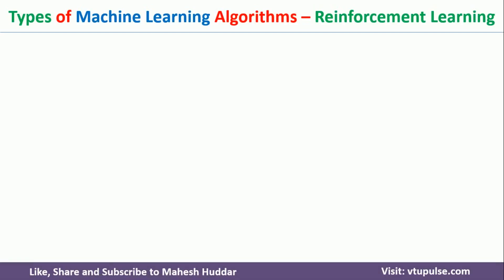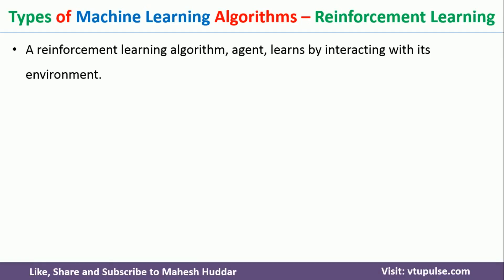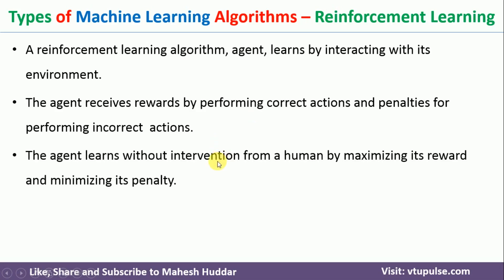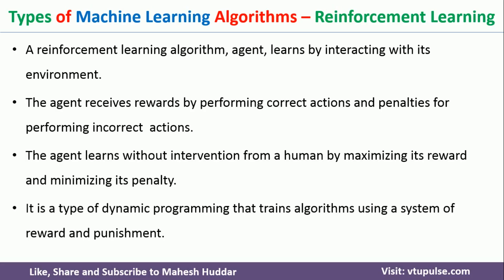The last type of algorithm is reinforcement learning. In this case, the agent learns by interacting with its environment. The agent performs some set of actions — if it performs correct actions, it is given rewards; if it performs incorrect actions, it is given a penalty. The agent keeps performing different actions, and for a particular set of actions where it gets the maximum reward, those actions are considered the learned parameters. A record is maintained for each action — whether it received a reward or a penalty — and the set of actions with maximum reward is the answer.